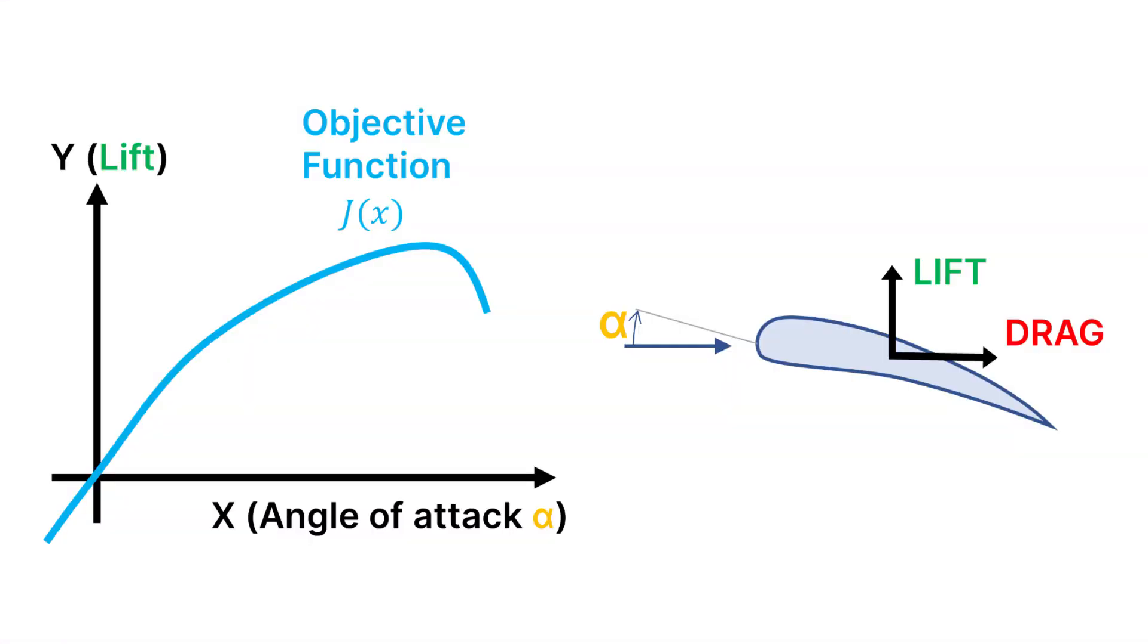But before we even dive into aerodynamics, let's first have a quick look at how optimization problems are typically solved in general. Imagine we want to maximize a certain output value y, which could be the lift of an airfoil, by changing the input variable x, which could be the angle of attack of that same airfoil. The relationship between x and y can be expressed through a mathematical function, which we can call our objective function.